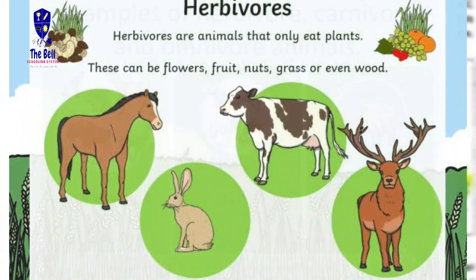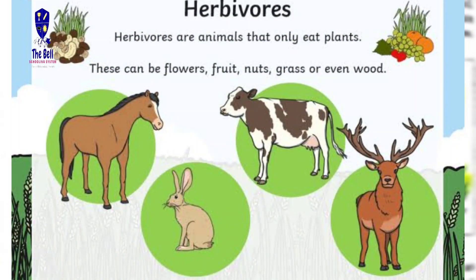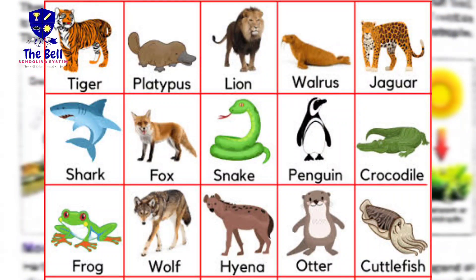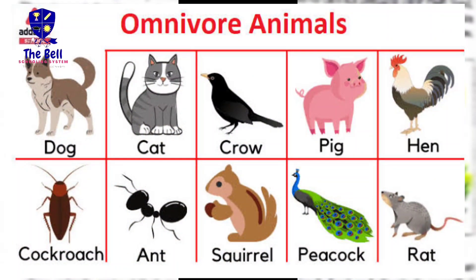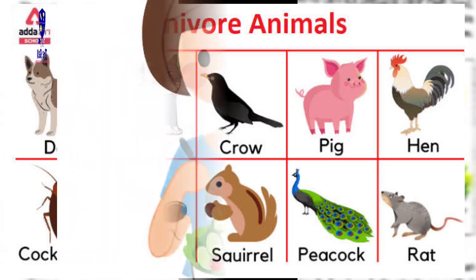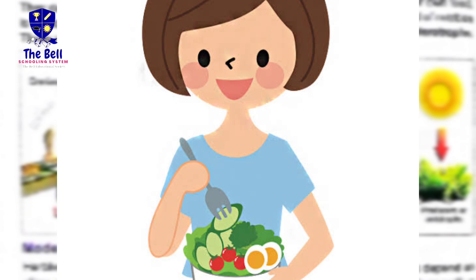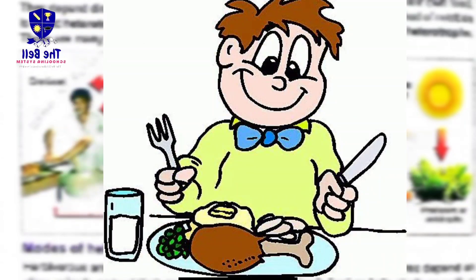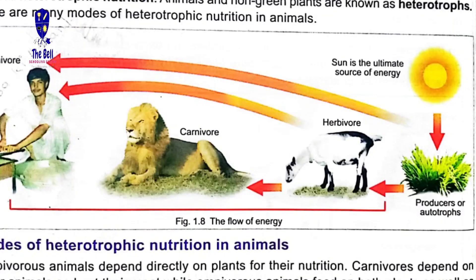Heterotrophic nutrition کے modes میں سب سے پہلے herbivores ہیں — وہ organisms جو صرف plants پر depend کرتے ہیں، جیسے goat۔ دوسرے carnivores ہیں جو دوسرے animals پر depend کرتے ہیں اور صرف meat کھاتے ہیں۔ تیسرے omnivores ہیں جو plants اور animals دونوں سے nutrition لیتے ہیں۔ Human beings omnivores میں آتے ہیں — ہم vegetables بھی کھاتے ہیں اور meat بھی۔ یعنی جو ہماری دنیا کا energy کا source ہے وہ sun ہے۔